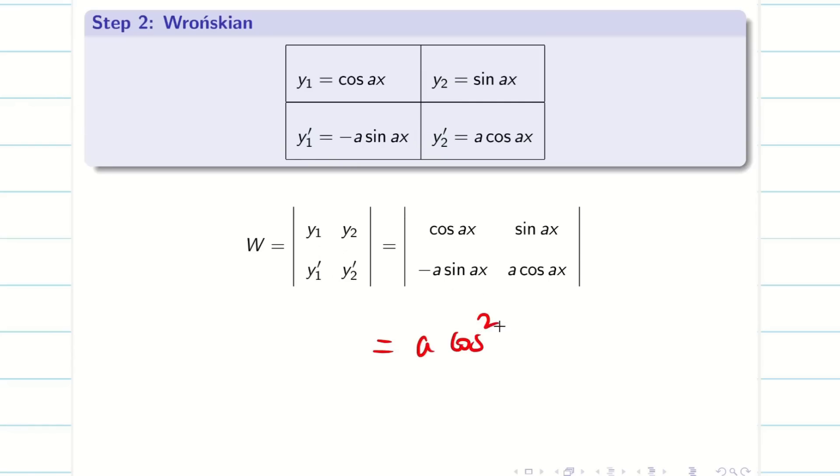Now, expand the determinant. We'll be getting a into cos² ax. Here, minus into minus plus a into sin² ax. Now, taking a outside, cos² θ plus sin² θ is 1. So, I'm getting the answer a. And a is going to be not equal to 0. That is very important. Therefore, my Wronskian W is equal to a. Step 2 gets over.